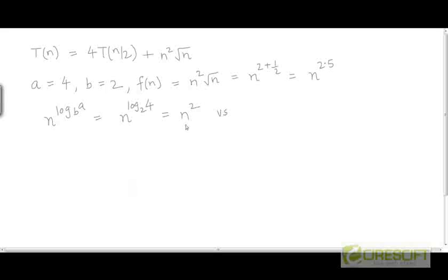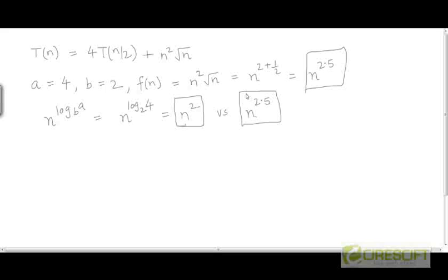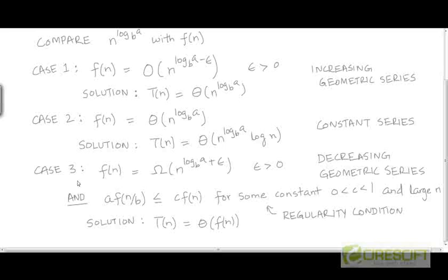If we compare the function n^(log_b a) with f, we find that f is polynomially larger than n^(log_b a). So we are in Case 3 of the Master Theorem, where f is polynomially larger than n^(log_b a).